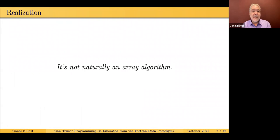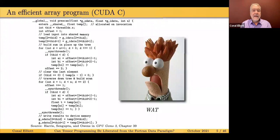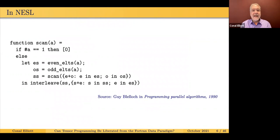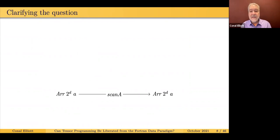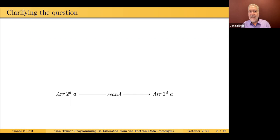I thought about this question for a good while and eventually it dawned on me that I was not going to come up with an answer if I think of it in terms of arrays, because it's not an array algorithm. It's an array program of course, but the essential algorithm — the beautiful kernel behind it — is not about arrays. It's about something else. And one thing I didn't mention: this algorithm only works if the number of elements in your input is a power of two. This constraint shows up in a lot of algorithms, particularly parallel algorithms, and it's already a clue that there's something other than arrays under the surface.